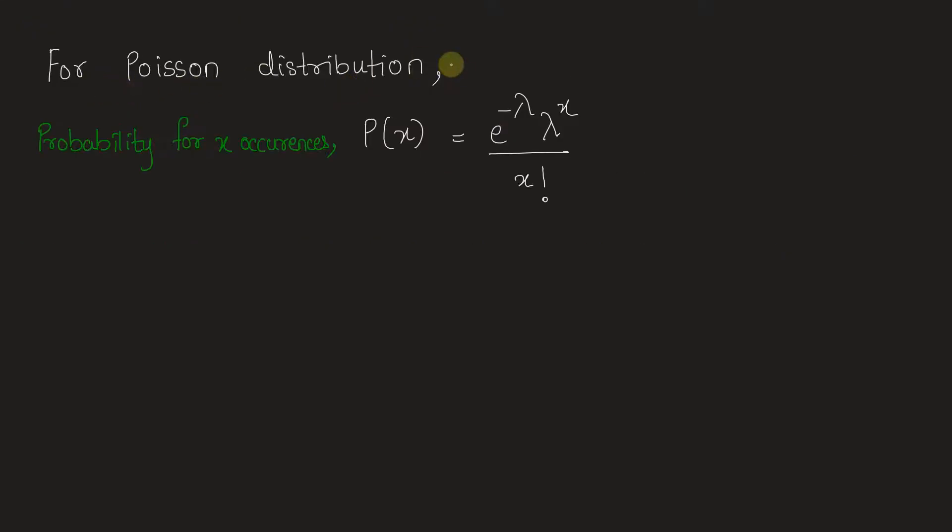For Poisson distribution, we know that probability for x occurrences is given by P(x) = e^(-λ) × λ^x / x!, where λ is the mean value of occurrence, which is given as μ in the question.